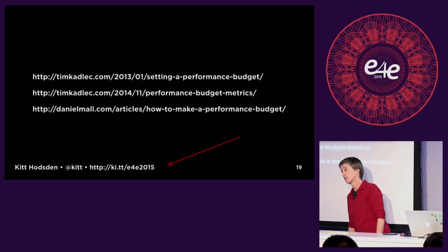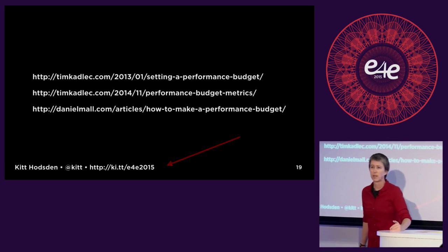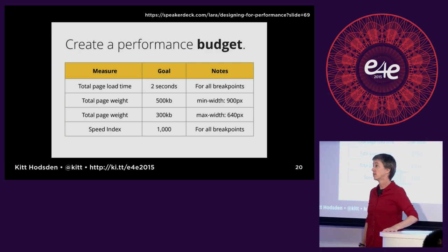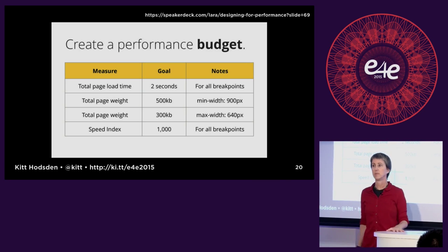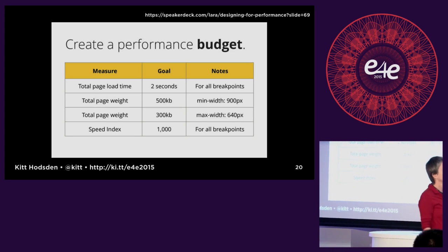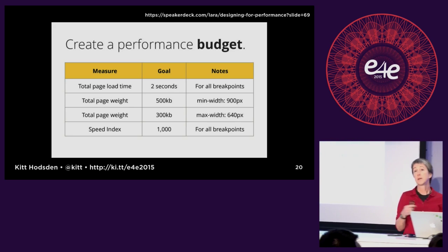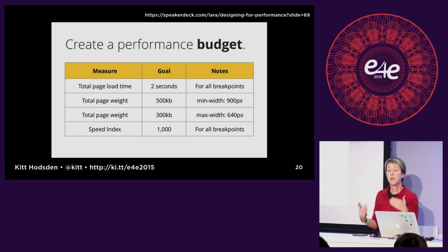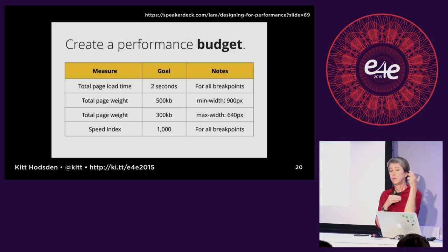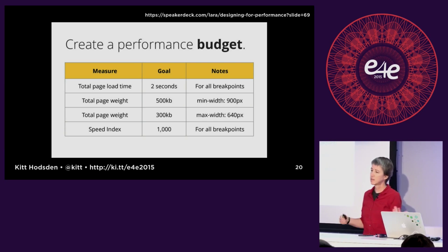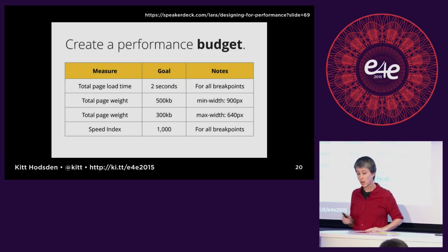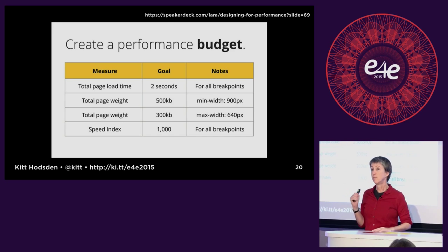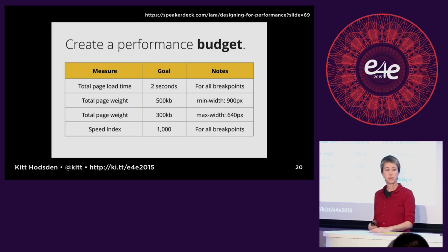If you don't know where to start with a performance budget, pull from what someone else has already done. Etsy has incredible performance budget goals — it stuns me. They have load time, page weight for mobile, and page weight for the browser on fast and slow networks. If you have no idea where to start, these are a great place. I would honestly triple or quadruple them for my projects to start, and then work to get them down.